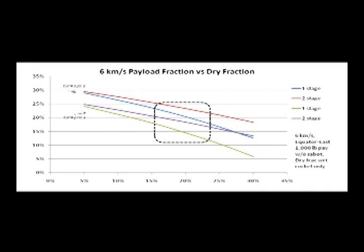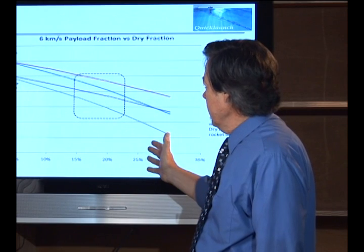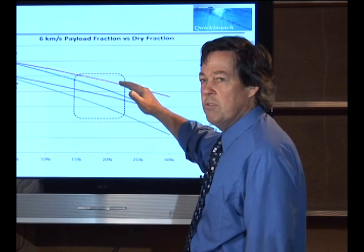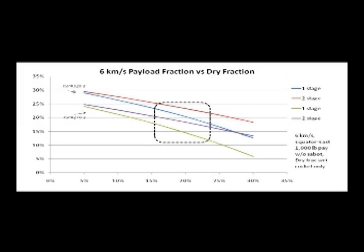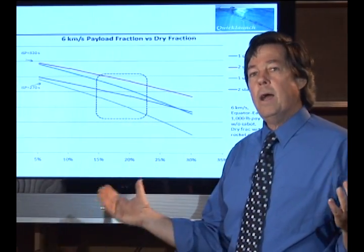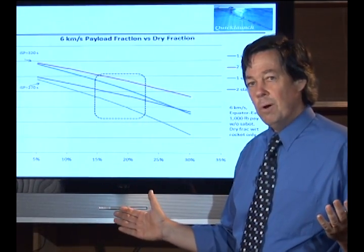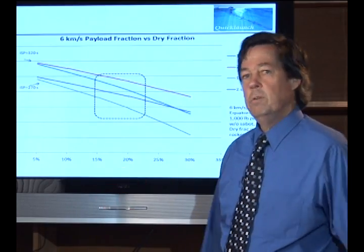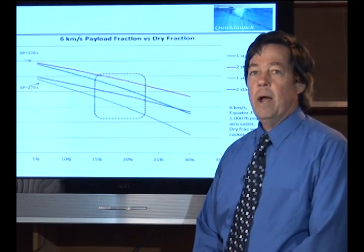This is the graph where the rubber meets the road. This slide here shows why our technology is superior to rocket launch. If you look here, what you'll see is these number of curves that show the percentage of payload as a function of dry mass fraction. The important salient feature here is that this blue curve is us. We're above 20%. Ordinary rockets are around 3%. In other words, we're seven times more efficient than a standard multi-stage rocket launch.